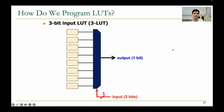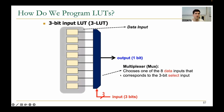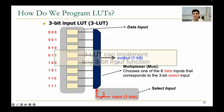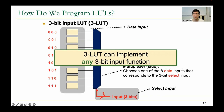How do we program lookup tables? This is a three-bit input lookup table, or a 3-LUT. It has a multiplexer with a 3-bit select signal that outputs a single bit. The cells on the left are called data inputs or configuration memory, and the select signal is called the select input. According to the value of the select signal, we select one of these cells and output it from the multiplexer.